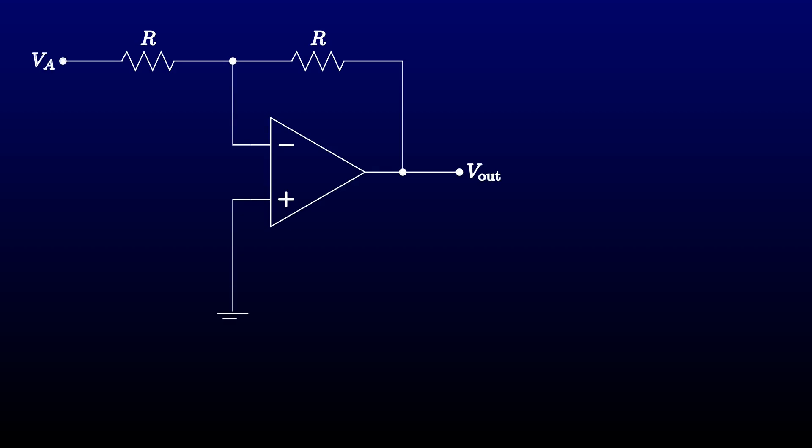Just as the summing amp adds the voltages at its inputs, perhaps with weights, the difference amp subtracts them. To build a difference amplifier, let's start with an ordinary inverter like the one we looked at two episodes ago.